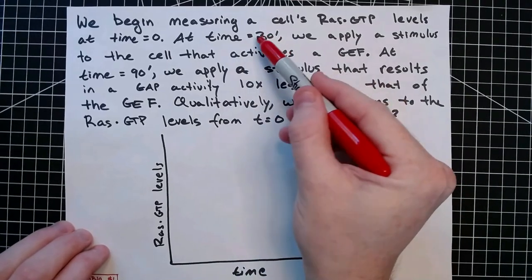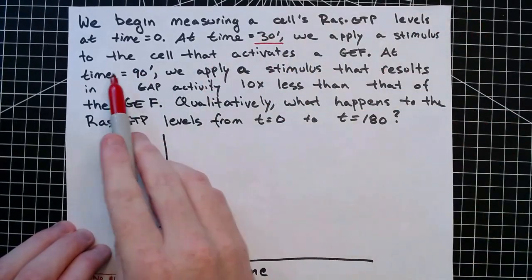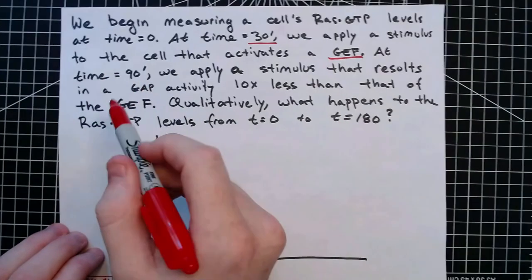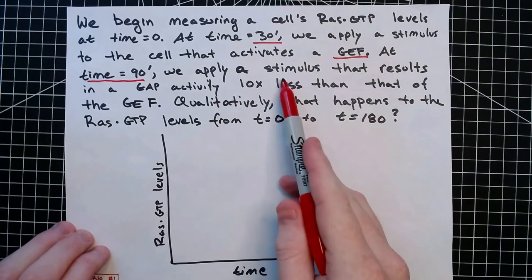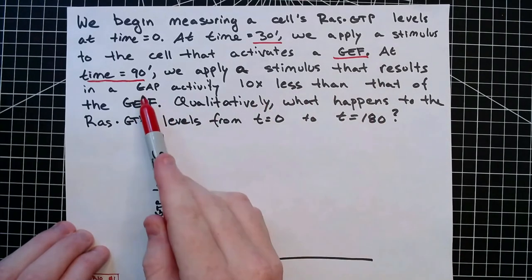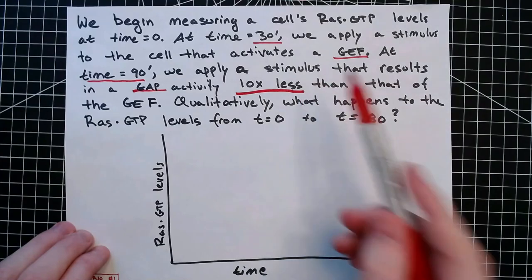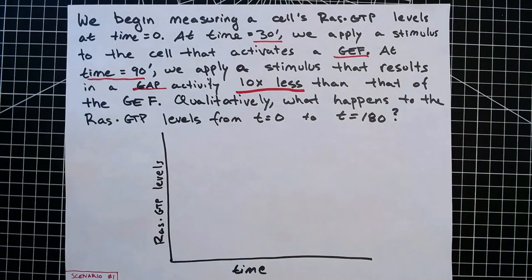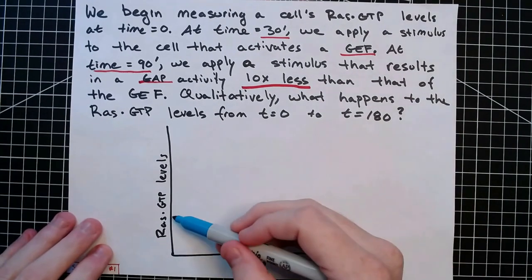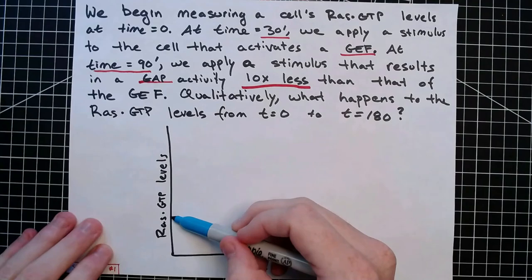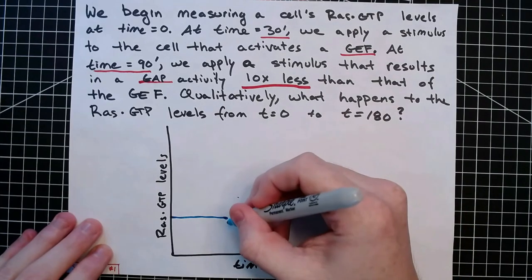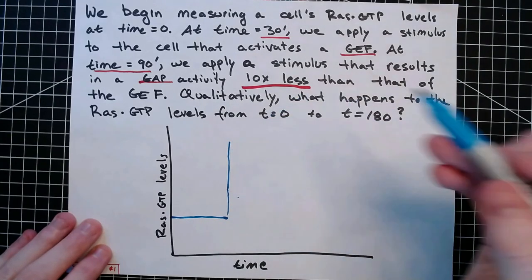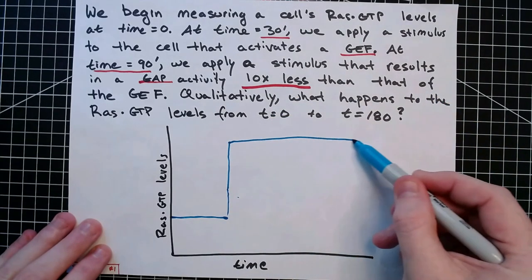So if we read through this: at T equals 30 minutes, we apply a stimulation that activates a GEF protein. Then at time 90 minutes, we apply a second stimulus that results in GAP activity that's 10 times less than that of the GEF. If we draw out what's happening over time, thinking about the GEF protein: it's initially low, and then at 30 minutes, the GEF protein goes high inside the cell, and it's going to stay high for the rest of the experiment.